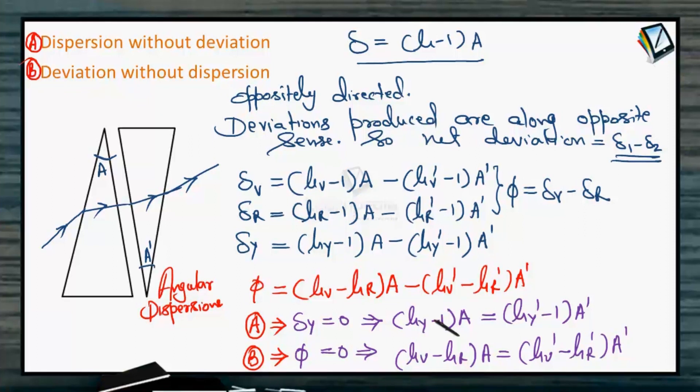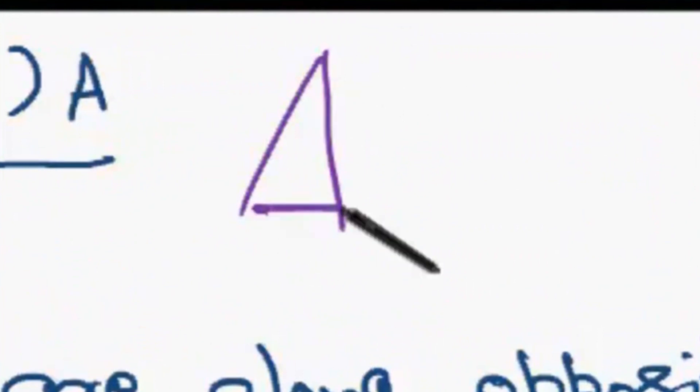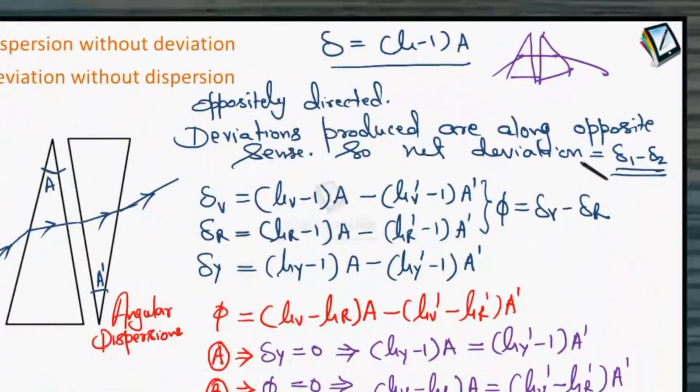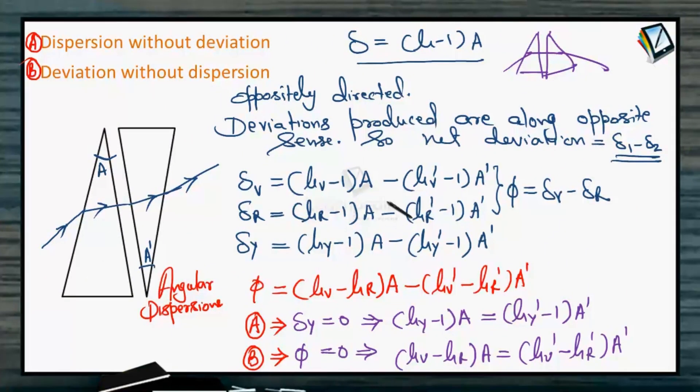You can use this concept to solve certain problems of this nature, and always give attention to this fact: whether both the prisms are similarly directed or oppositely directed. I have told you the case of oppositely directed. That is why these deviations are getting nullified or subtracted. In case the prism is kept inverted—if the first prism is kept like this and second one is also kept like this—then both the deviations will produce in the same direction. Then here it would be plus plus everywhere.